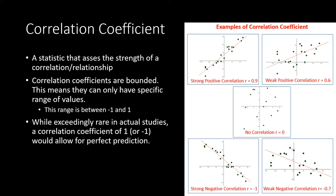The metric oftentimes used is the correlation coefficient — a statistic that assesses the strength of a correlation or a relationship. Please note that correlation coefficients are bounded, meaning they can only have values between negative one and one. If you ever find a correlation beyond this range, a mathematical error has been performed. A correlation coefficient of one or negative one is exceedingly unlikely — in all my years of research, I don't think any of my mentors has come across one. Basically, a correlation coefficient of one indicates that perfect prediction is possible, meaning knowing any value on one variable would allow you to perfectly predict the value on a related variable.